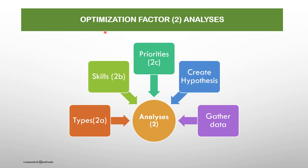I am going to discuss optimization factor analysis. The analysis comprises five different elements: type of analysis, skills needed to carry out analysis, prioritize the analysis, create hypothesis, and gather quality data. These five factors determine the impact on analysis to achieve the desired result.